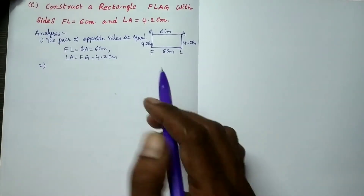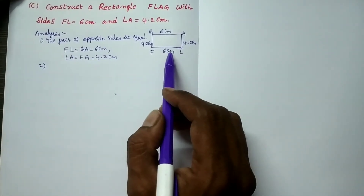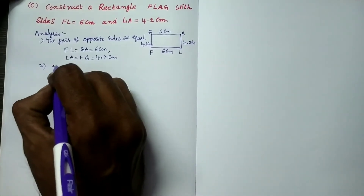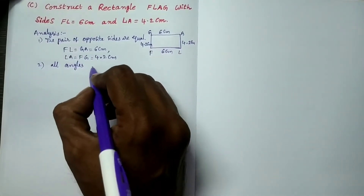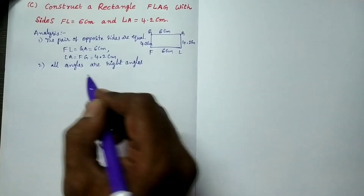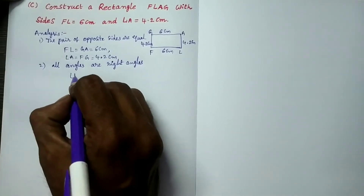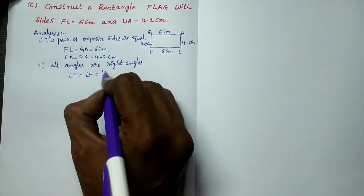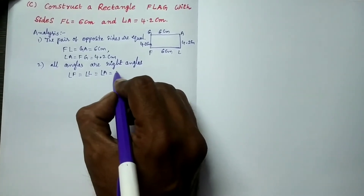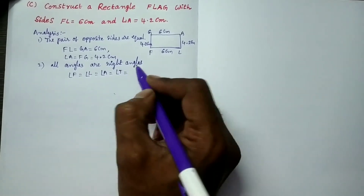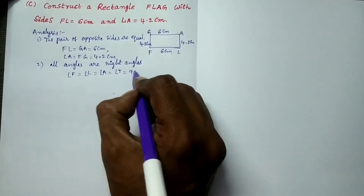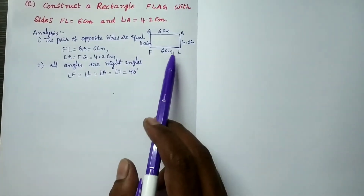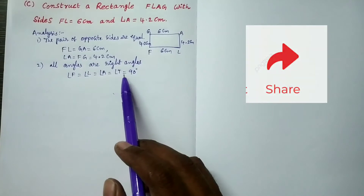The next property is all angles are right angles. Right angles means each one is 90 degrees. So angle F equals 90 degrees. This completes the analysis. Now we have all the sides and all the angles.